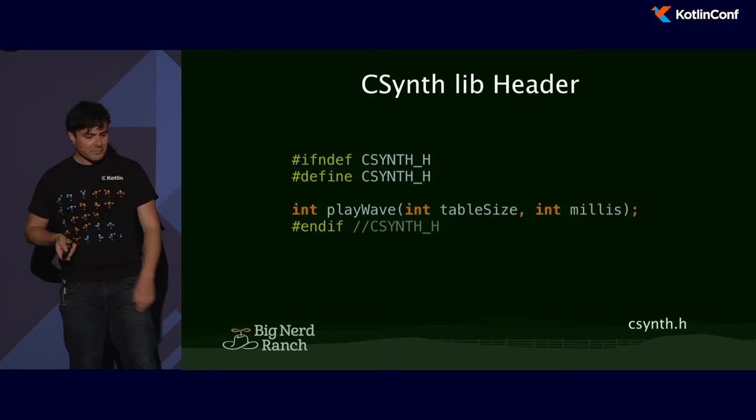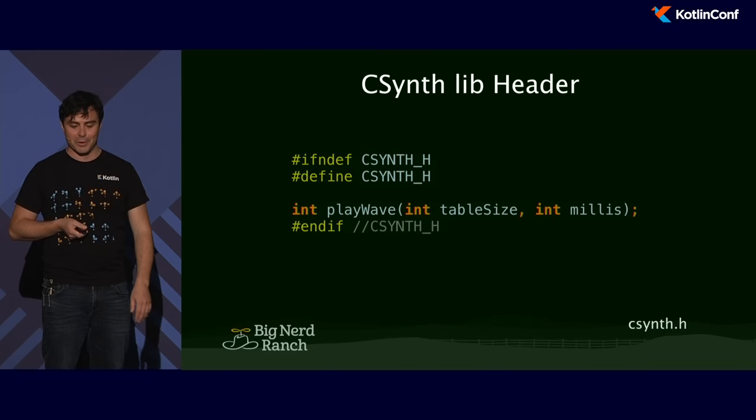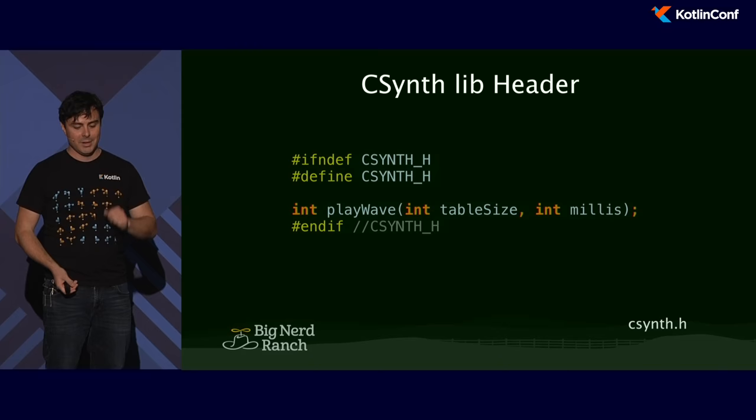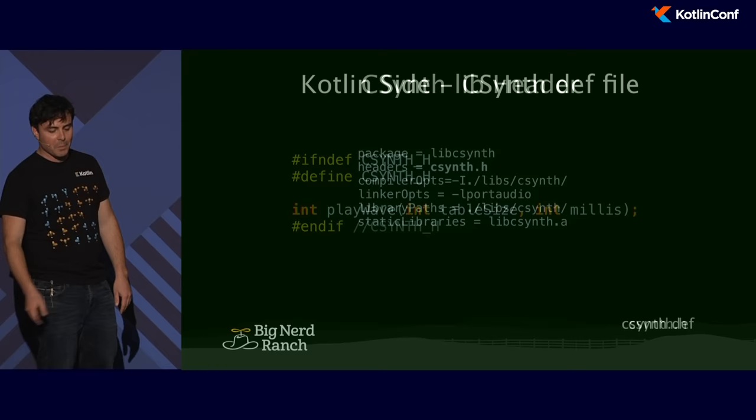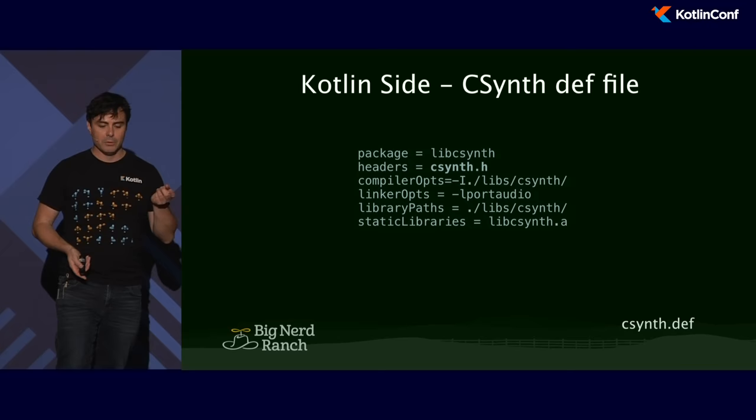Last thing: we're going to create a header file. The C interop tool is going to look at the header file and generate the function signatures. TableSize is going to define the pitch of the sine wave, and millies is going to be how long the sine wave actually plays for. Then I create a DEF file that maps to the binary I compiled — my CSynth lib — allowing me to generate a binding for it. Notice linker ops: -l port audio. If my C library has dependencies, even though I'm in the land of Kotlin, I'm going to have to link against those. Getting the linker and compiler options right is a bit of an art form.